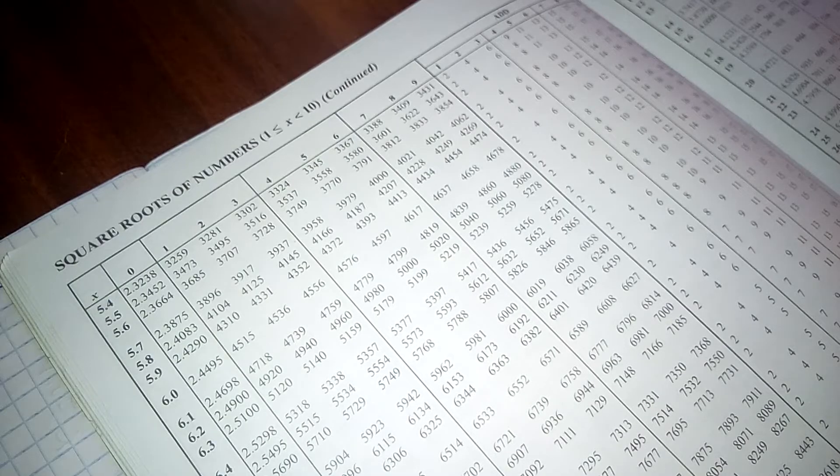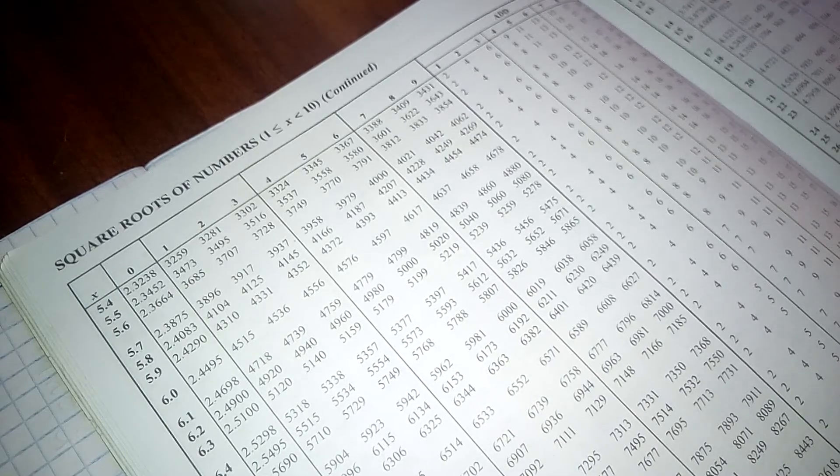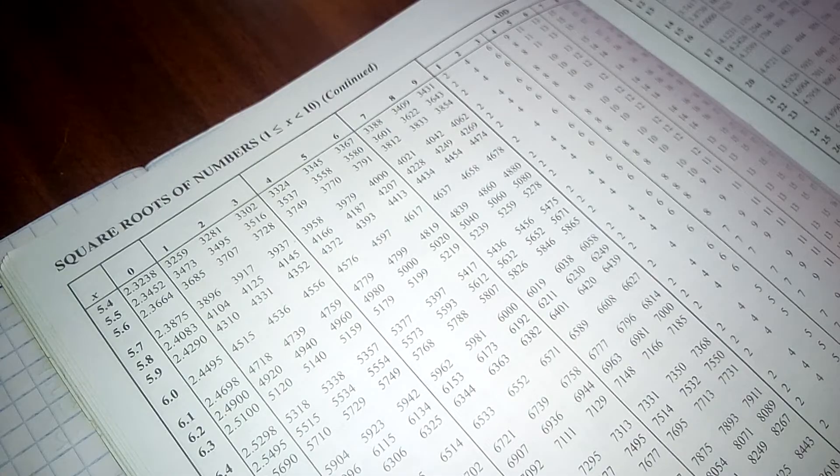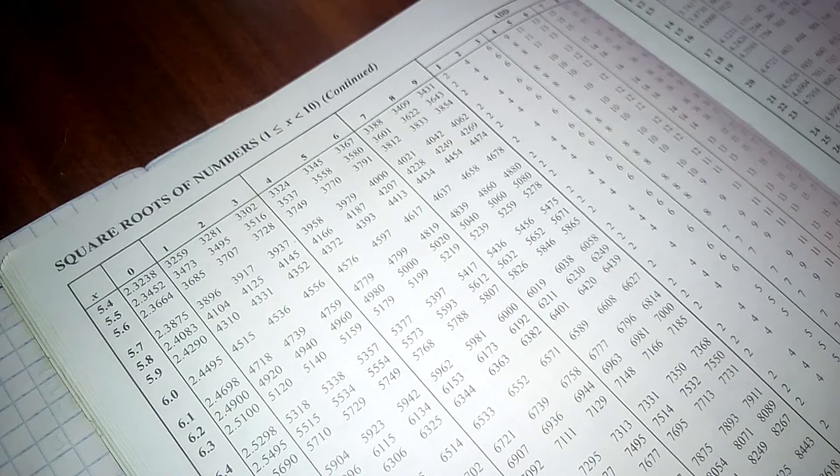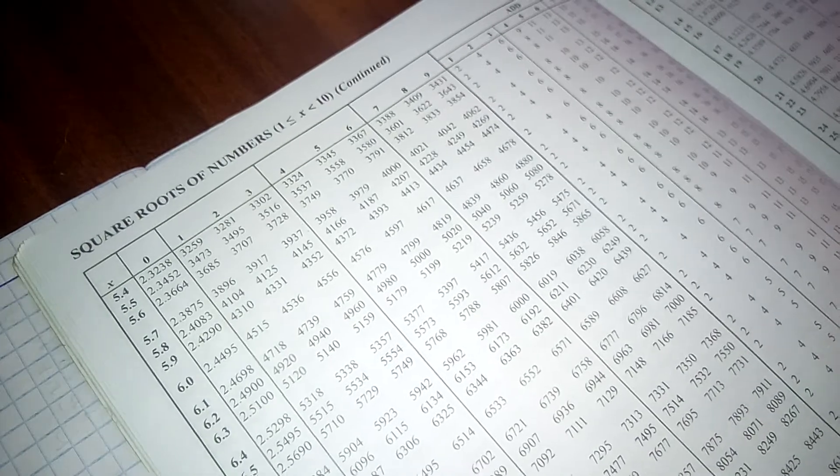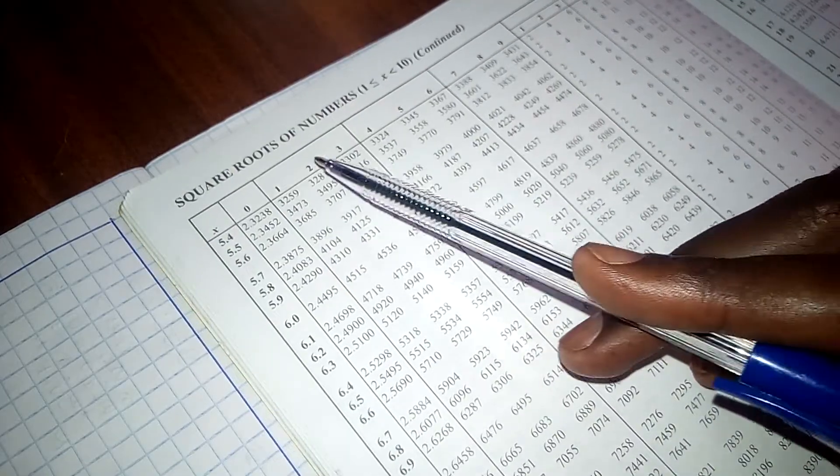Today we are going to look at how we can find square roots of numbers using this mathematical table. So we are going to look at this four-figure elementary mathematical table and we are going to straight away look at where we have square roots of numbers.